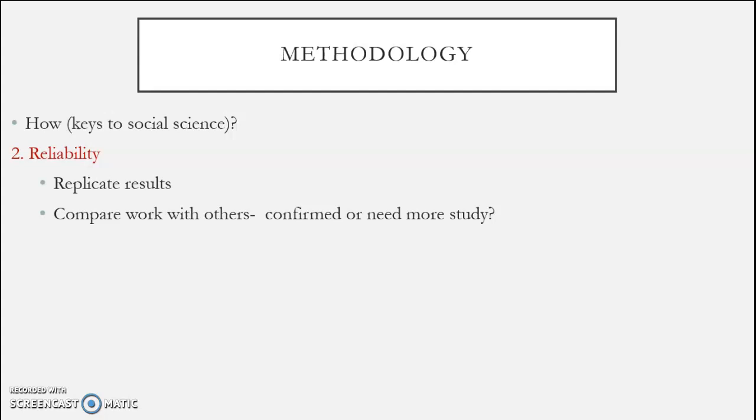So reliability tells us, yeah, you nailed it, we can repeat this, we can replicate it, or we need more study. Here are the weaknesses. Here are the flaws in that argument. So when reliability shakes out, we're going to know whether we can convince others that information is correct. Can we convince them that what you are saying, your valid argument, is correct?